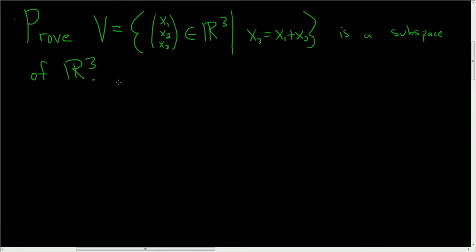We have a set, which we're calling V. V is the set of all of the vectors in R³ such that the third component is equal to the sum of the first two components. And we want to prove that this is a subspace of this vector space. In all of this, our field will be the set of real numbers.